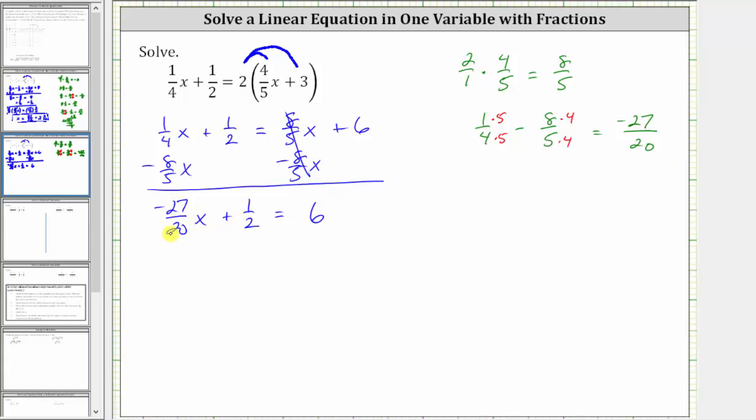And now to isolate the variable term, we undo the plus one-half by subtracting one-half on both sides. Simplifying, we have negative 27/20 x, and then one-half minus one-half is zero.